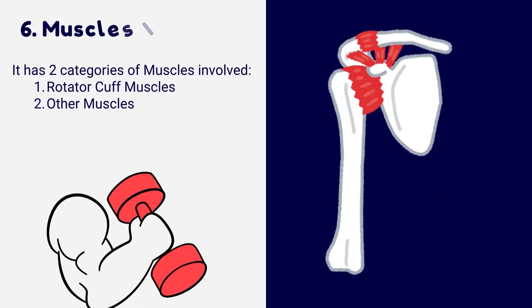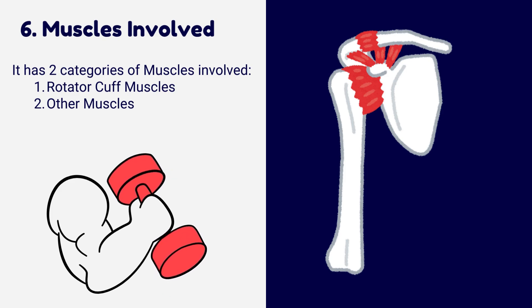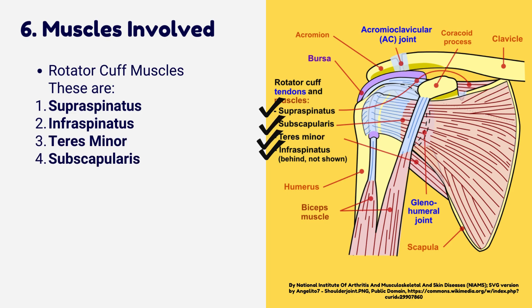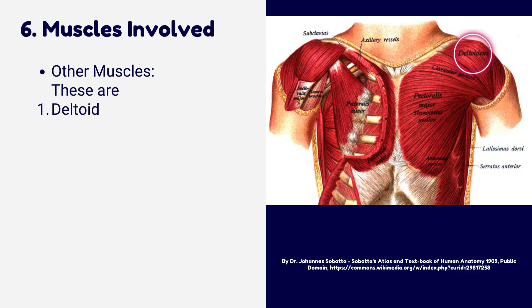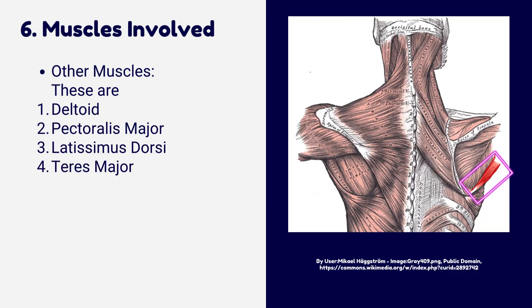Muscles involved in the shoulder joint fall into two categories. Rotator cuff muscles: supraspinatus, infraspinatus, teres minor, and subscapularis. Other muscles involved: deltoid, pectoralis major, latissimus dorsi, teres major, biceps brachii, and triceps brachii.